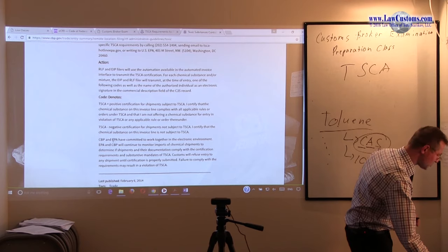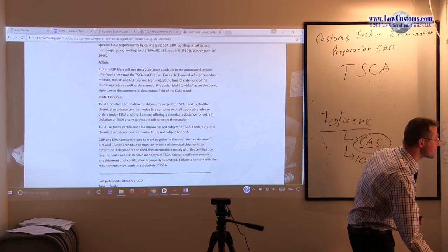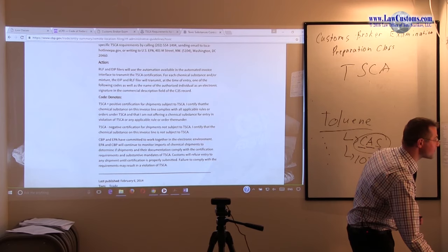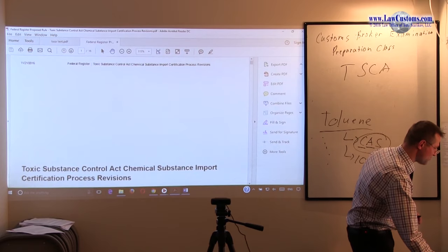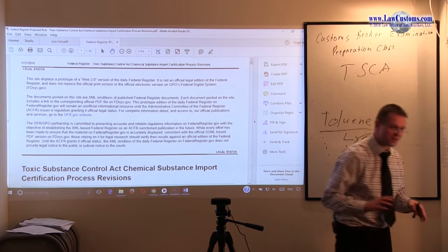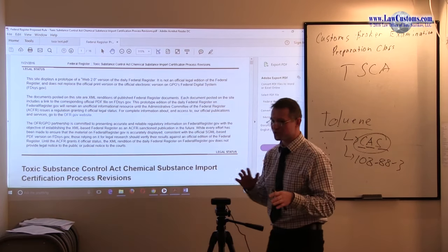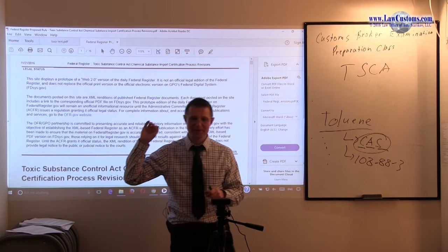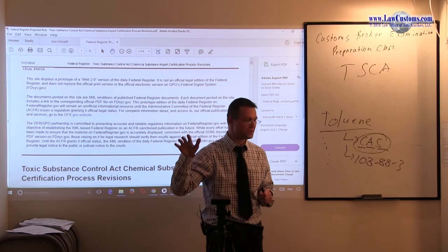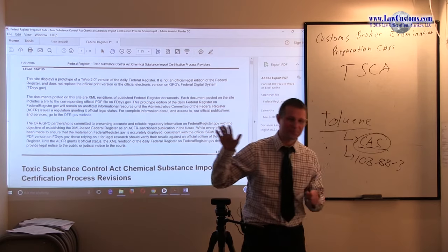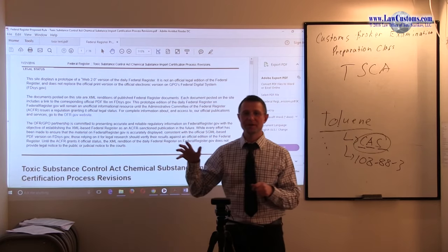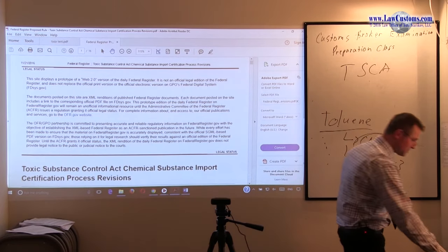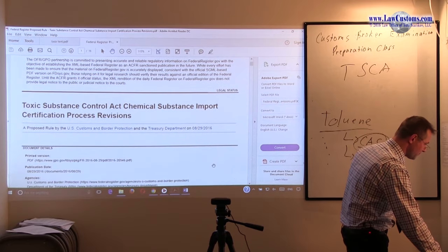Those are the things that can be done. There may be limitations, but pretty much those are the codes: TSCA minus, Toxic Status Control Act minus, Toxic Status Control Act plus. You put it in the system, and you comply with your declaration. Of course, you'll have to put other fields required, but if you're doing it for each entry, it will be associated. Customs will know who the manufacturer is, who the importer of record is associated with this declaration.